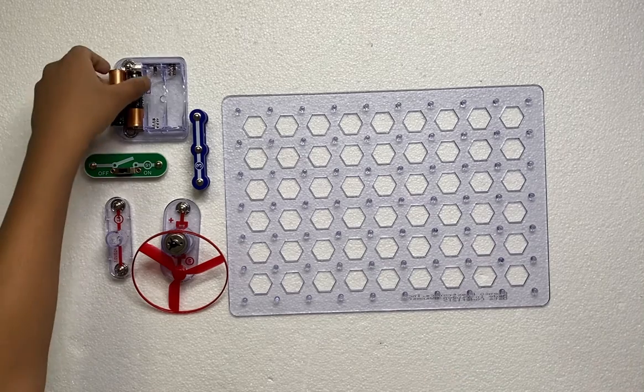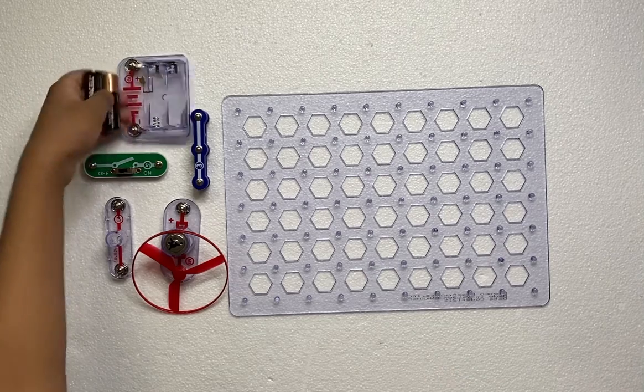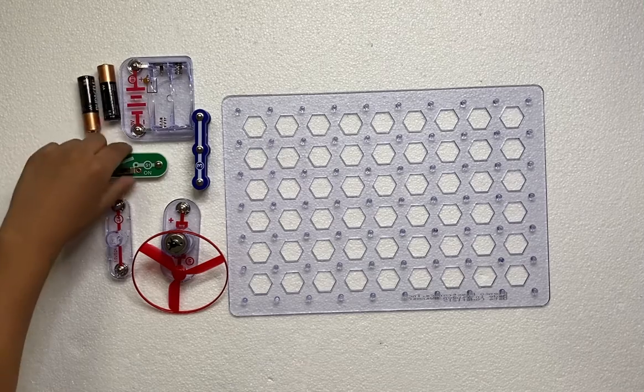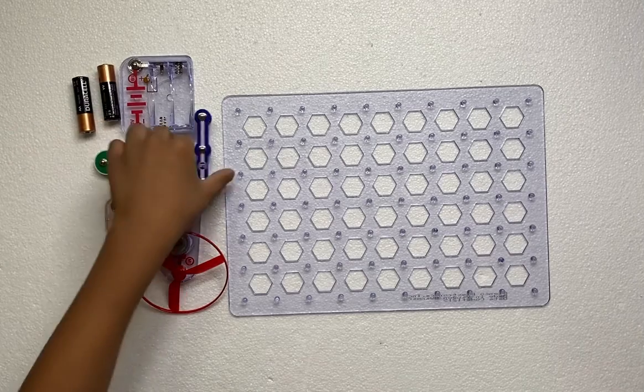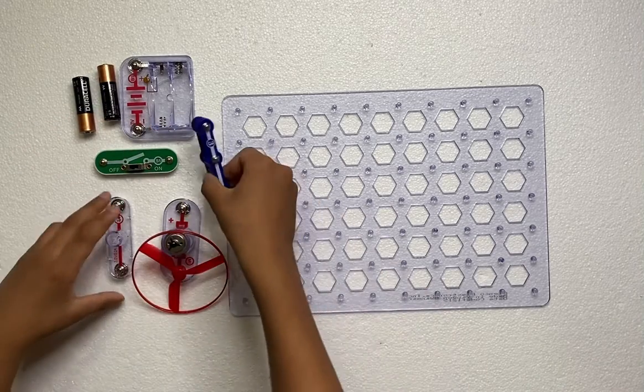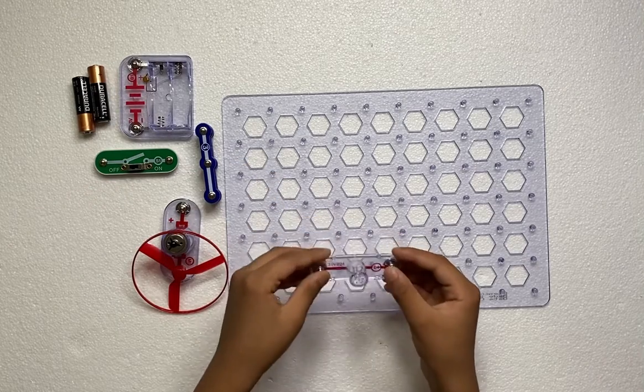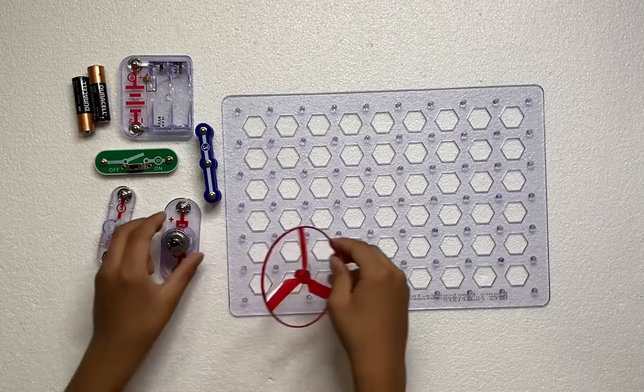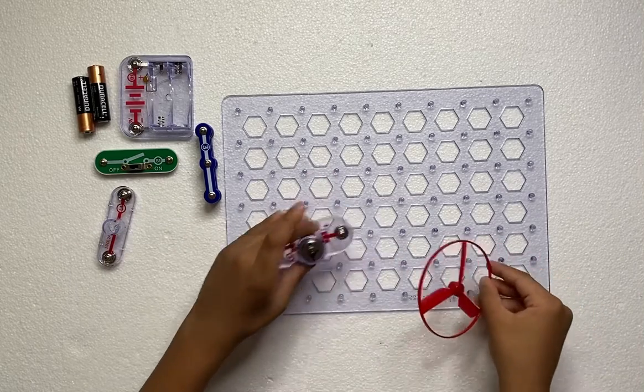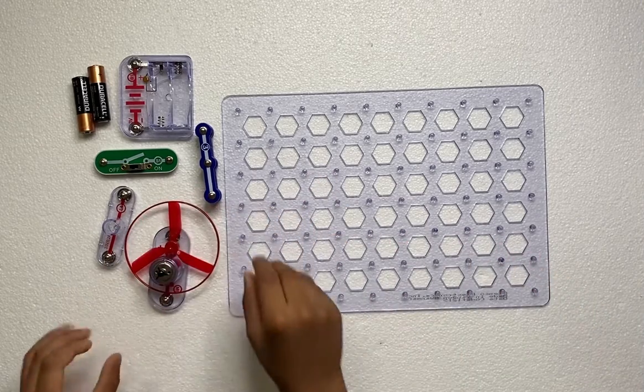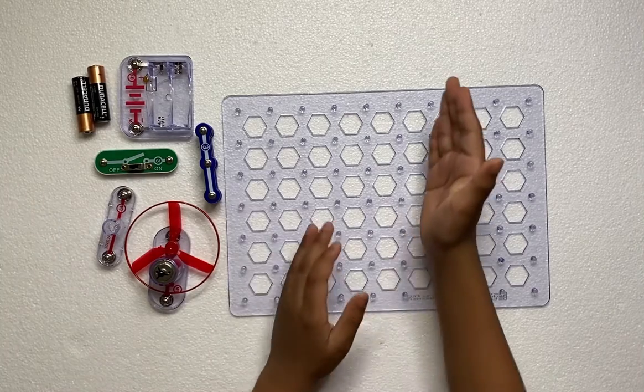Here are the parts: the battery holder with the batteries, the slide switch, three snap wire pieces, the light L1 lamp, the motor, and the fan. Those are the pieces.